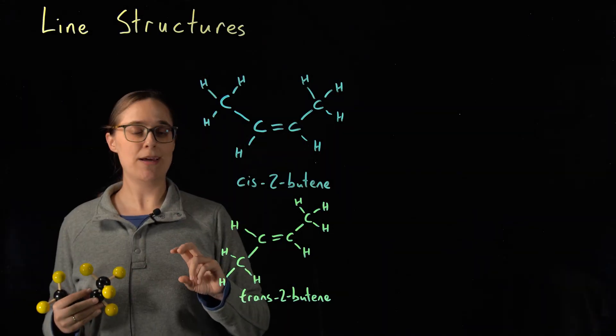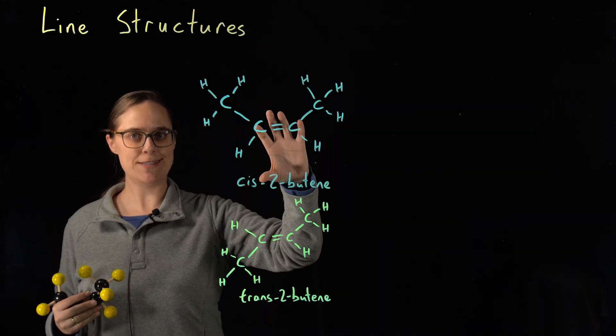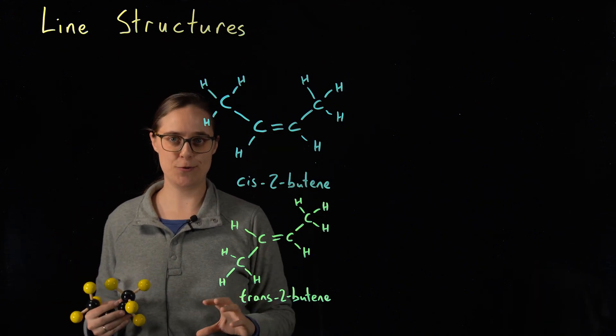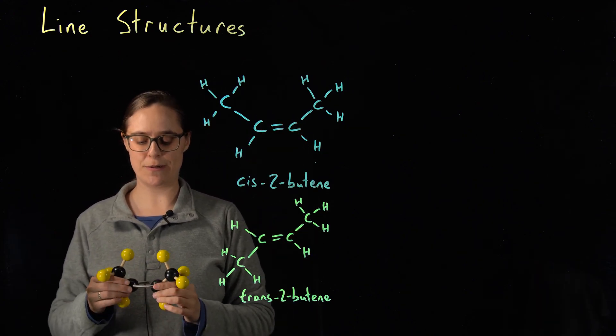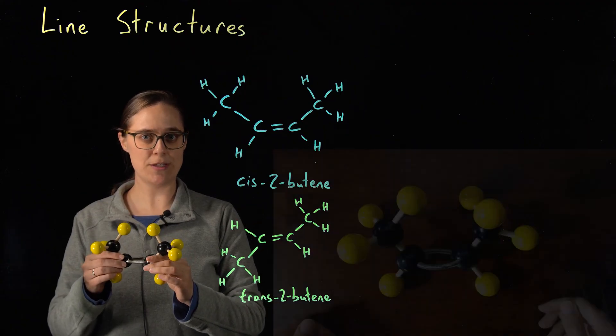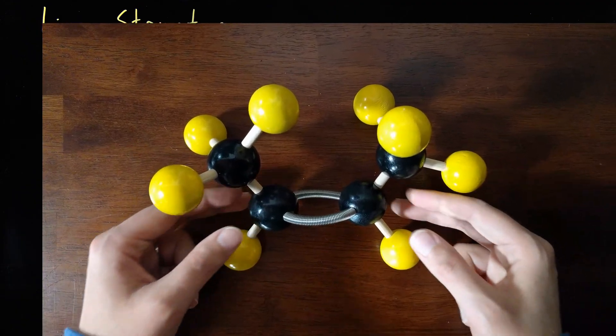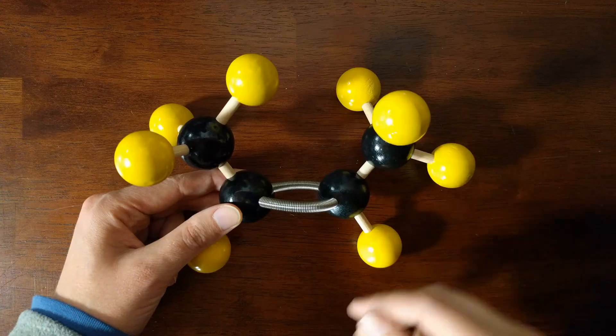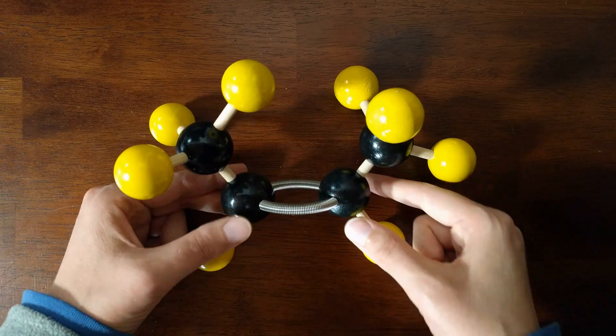So problem two, I have Lewis structures drawn for cis-2-butene and trans-2-butene. These molecules are very similar to each other, but let's take a closer look at this molecular model so we can see how they are different. So this is cis-2-butene. We have four carbons in a chain, one, two, three, four.